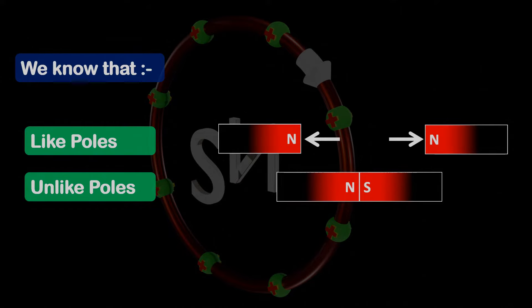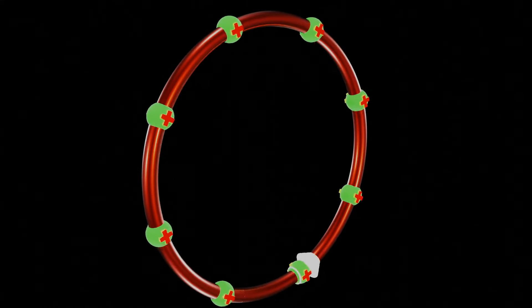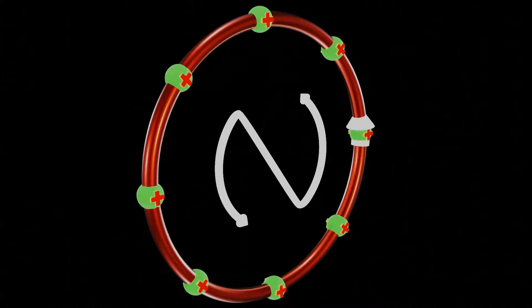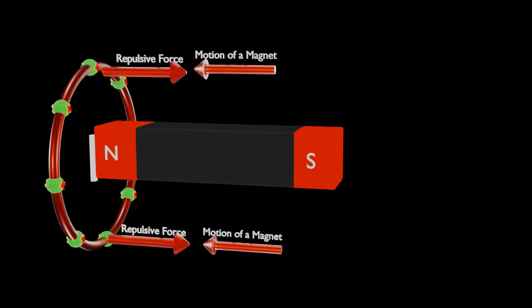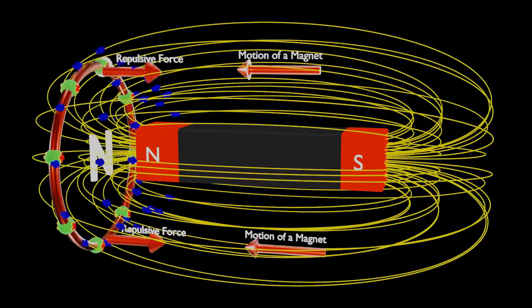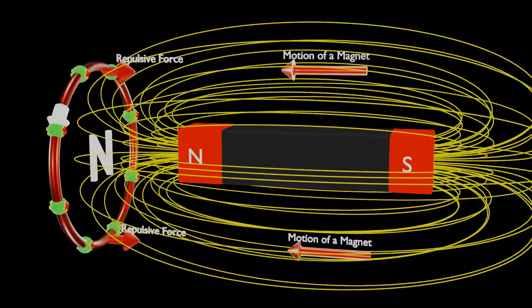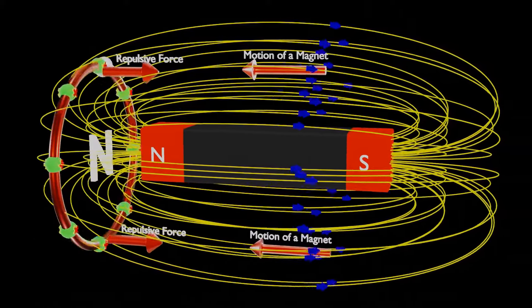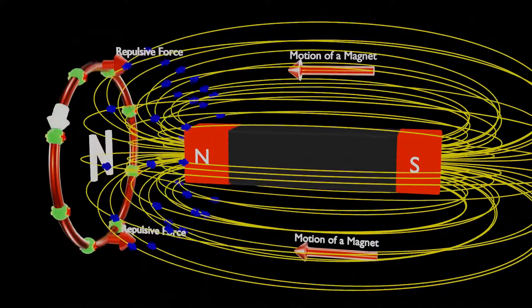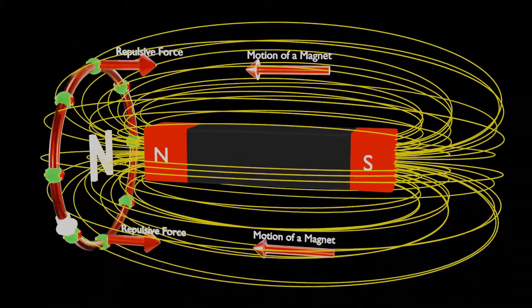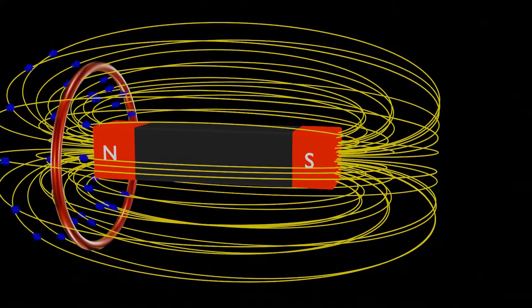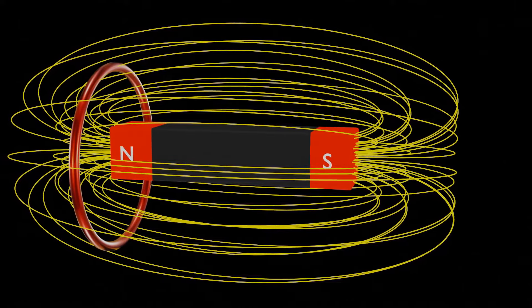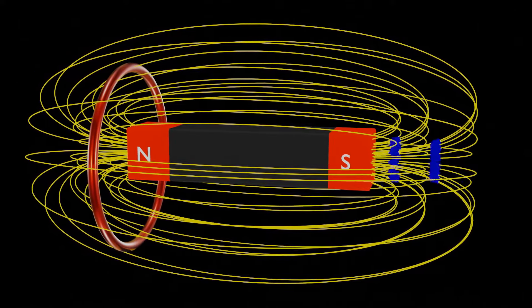Thus, according to Emil Lenz, to oppose the change in magnetic flux, the current in the coil starts flowing in an anti-clockwise direction and starts acting like a north pole to counter the cause — which is the motion of the magnet — due to which magnetic flux is changing. Note that current flows in an anti-clockwise direction only while the magnetic north pole is heading towards the coil. As the magnet stops moving, induction of electric current also stops, because now there is no change in magnetic flux.